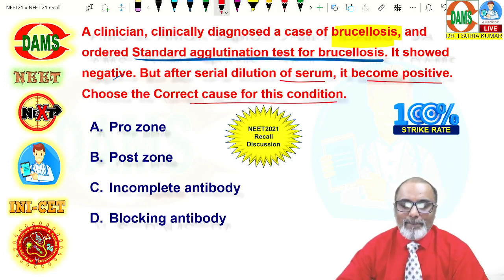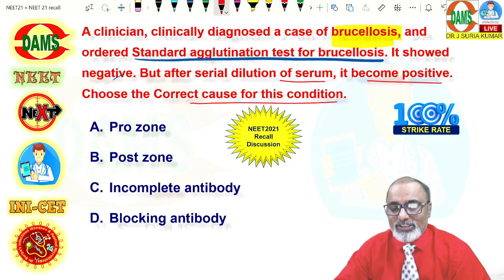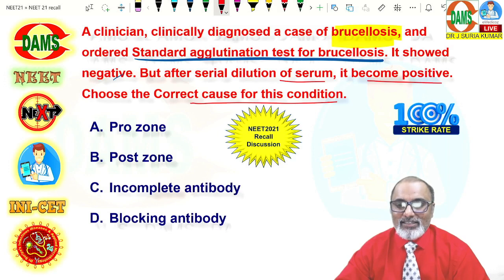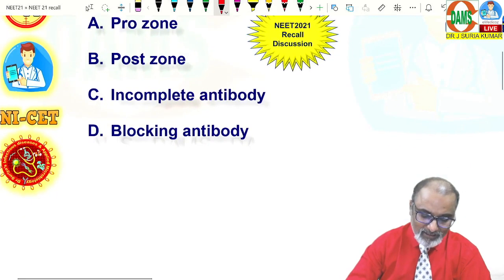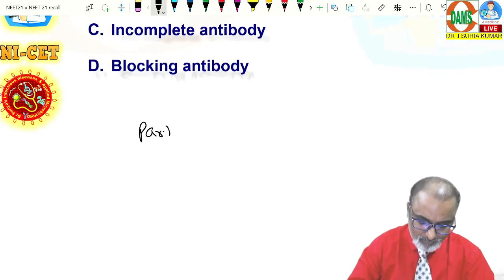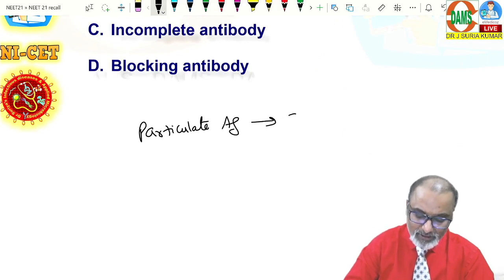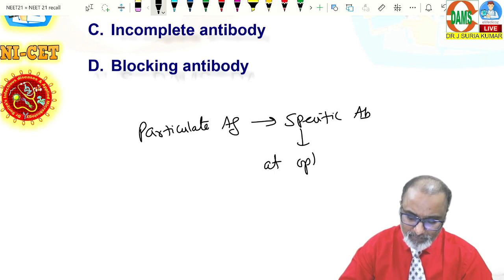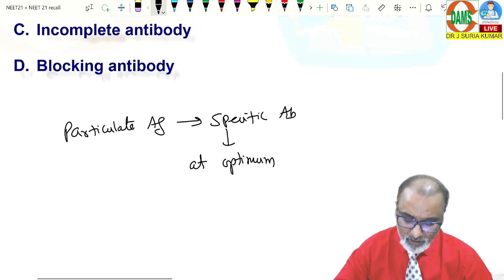You can deal by two ways. One based on immunology and brucella. It is an agglutination test. You know the basic definition of agglutination. It is nothing but particulate antigen reacts with specific antibody at optimum. Yes, these points are very important.